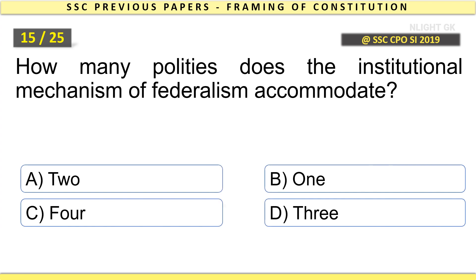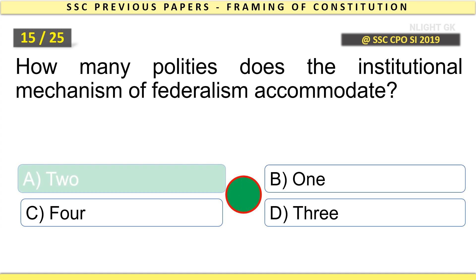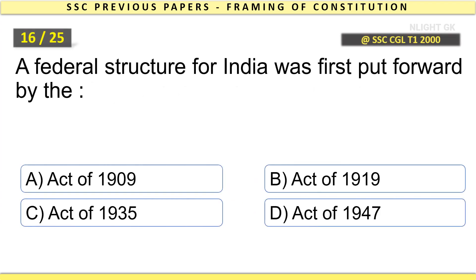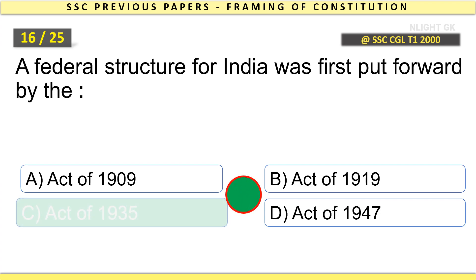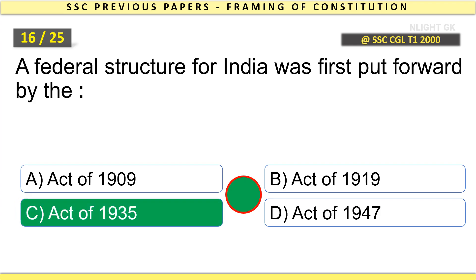How many polities does the institutional mechanism of federalism accommodate? A federal structure for India was first put forward by the Act of 1935.